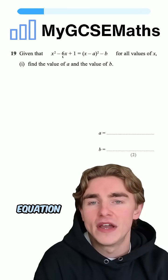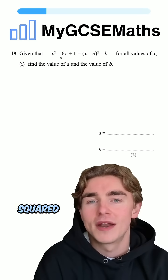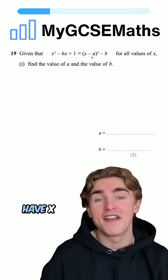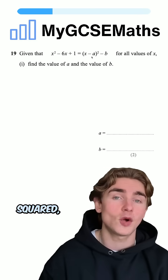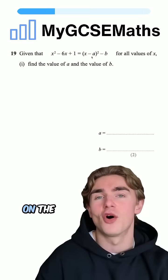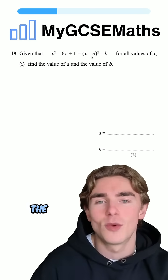Well, on the left-hand side of our equation, we have a quadratic x squared minus 6x plus 1, and on the right-hand side, we have x plus or minus something squared plus or minus something on the end. A classic completing the square question.